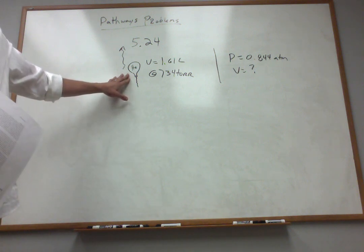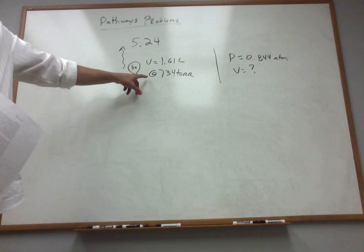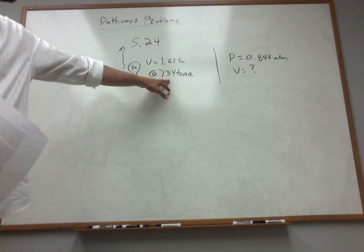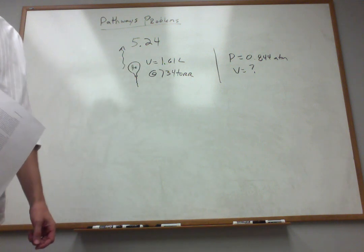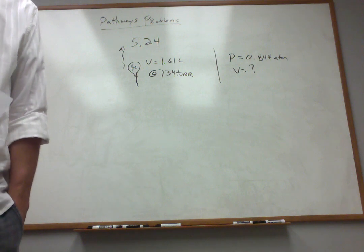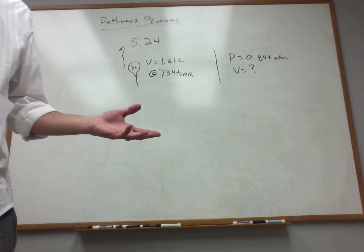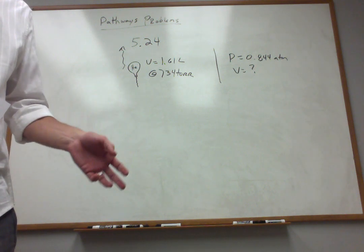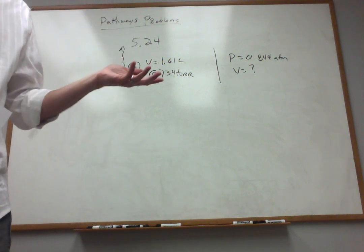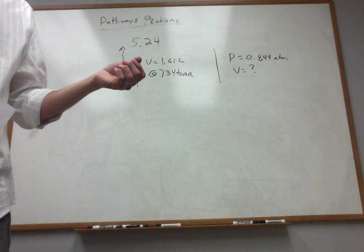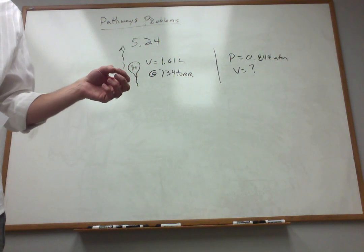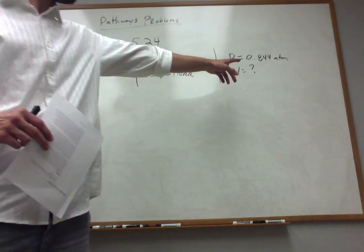There's a volume of helium contained within this balloon. And at the ground, at a pressure of 734 torr, the volume of that balloon is exactly 1.61 liters. And then we're going to release this balloon. Helium balloons like to go up in the air, and as you go up in the atmosphere, the pressure drops. So eventually, the pressure is going to drop to 0.844 atmospheres.